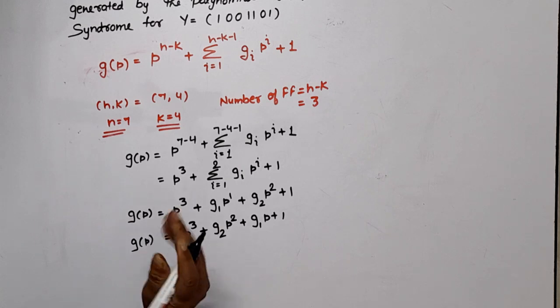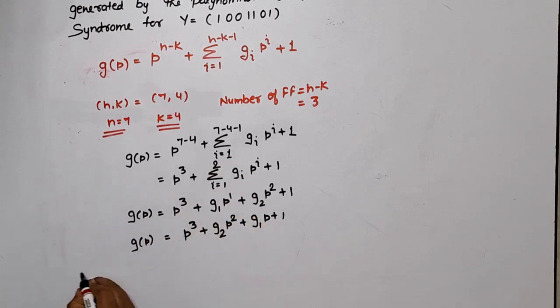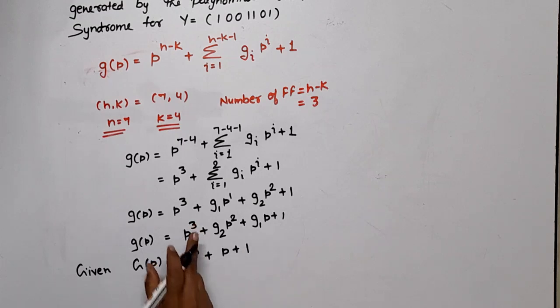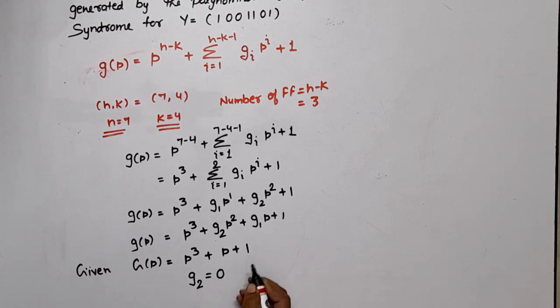Now, which question is given, we compare it with this. Given G(P) = P³ + P + 1. If we compare both, then G₂ term is missing, means G₂ = 0. P is available, means G₁ = 1. What is missing will be 0, what is available will be 1.